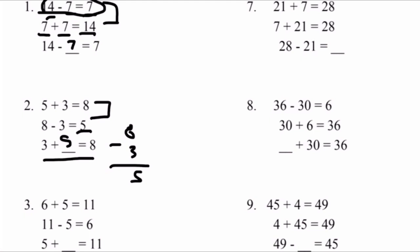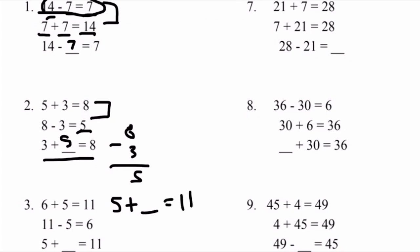8 minus 3 equals 5, so our missing number is 5. 3 plus 5 equals 8, like stated above: 5 plus 3 equals 8, and 8 minus 3 equals 5. Number 3: 6 plus 5 equals 11, and we also have the equation 11 minus 5 equals 6. In order to figure out our missing number — 5 plus blank equals 11 — we subtract 5 from both sides, and we get blank equals 6, because 11 minus 5 equals 6. So 5 plus 6 equals 11.